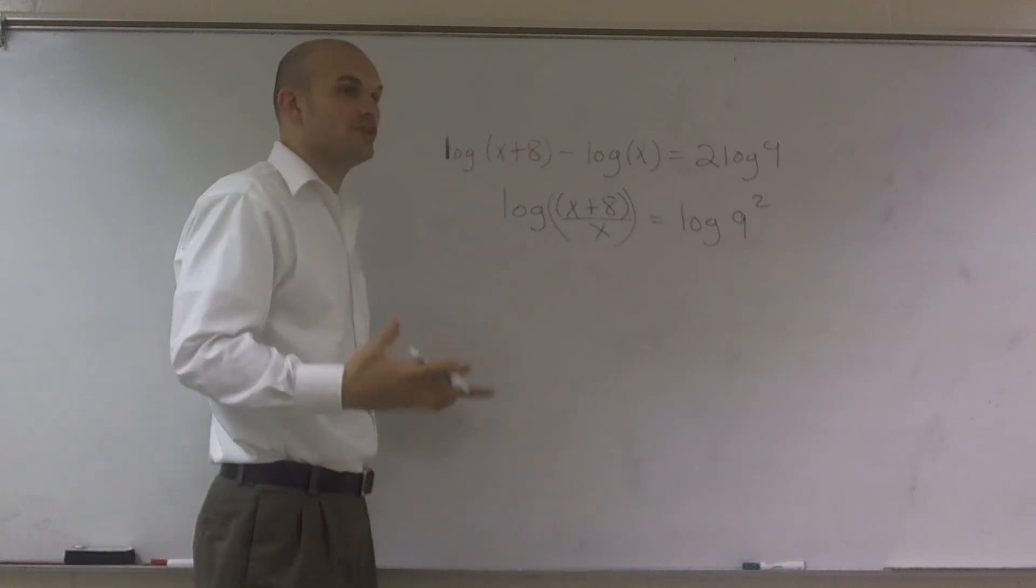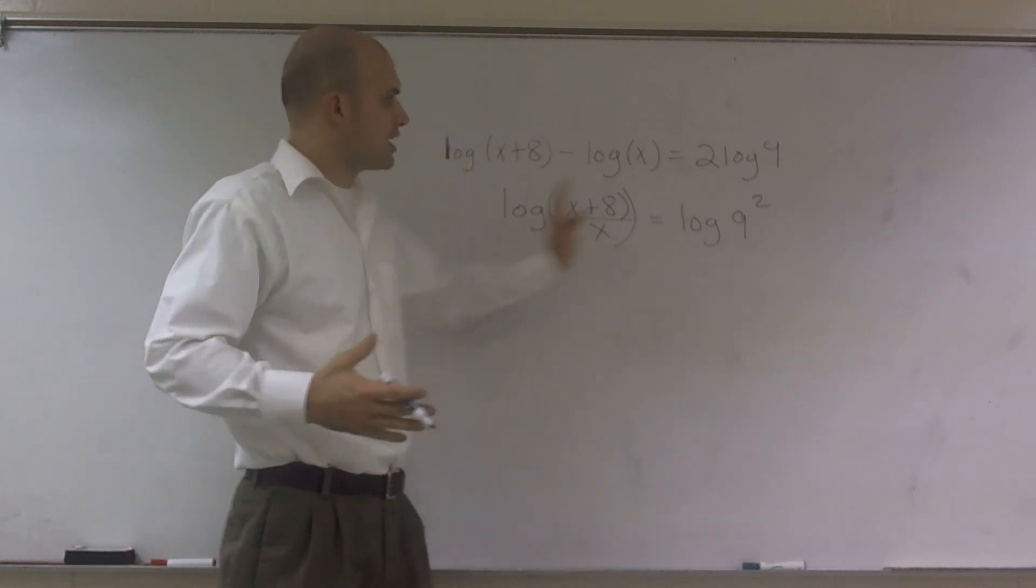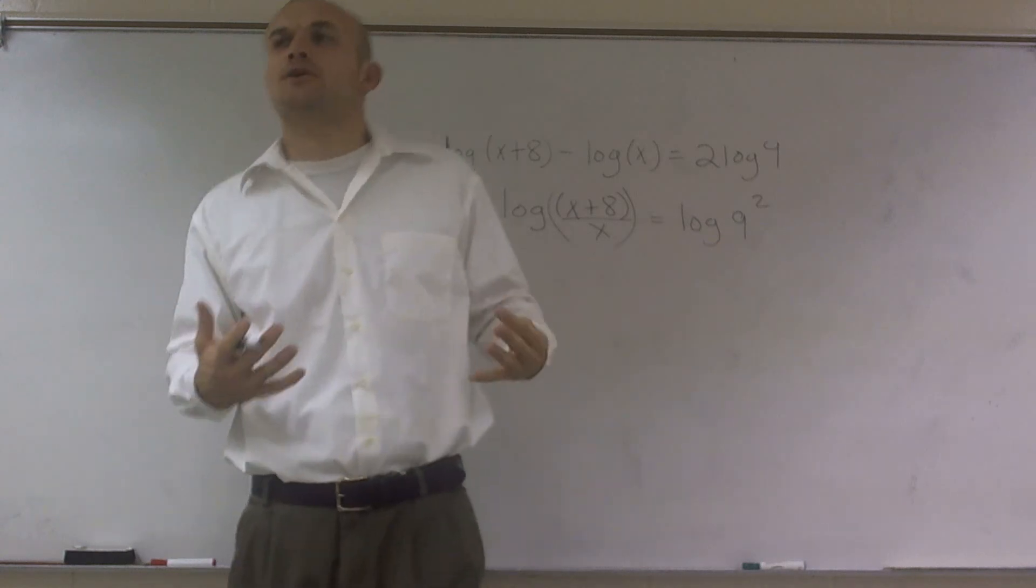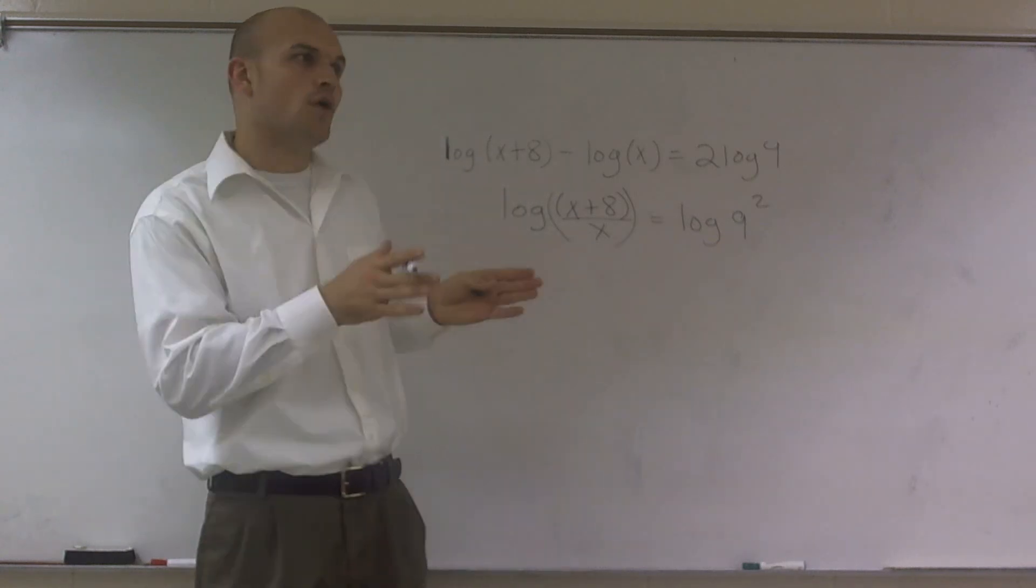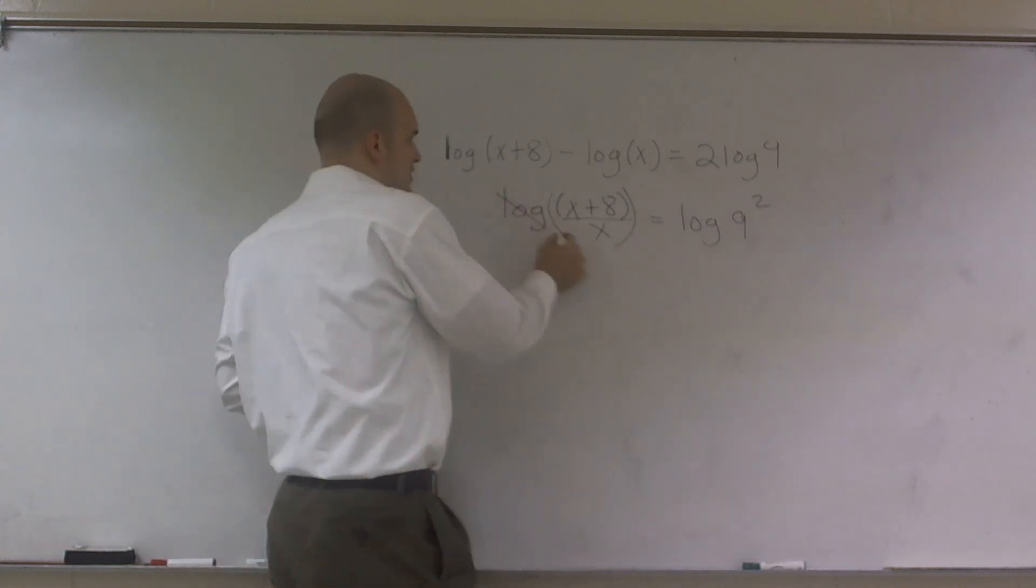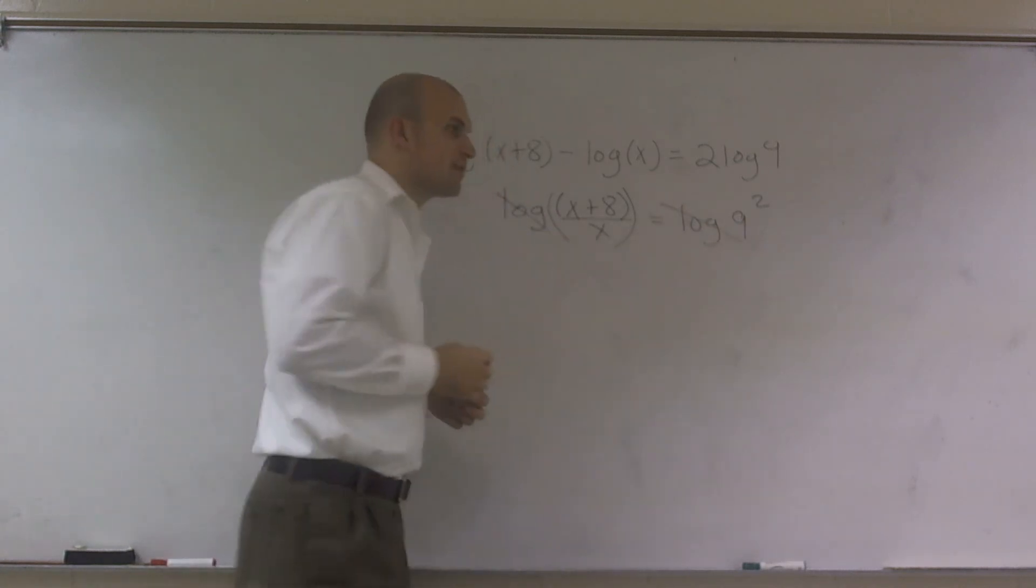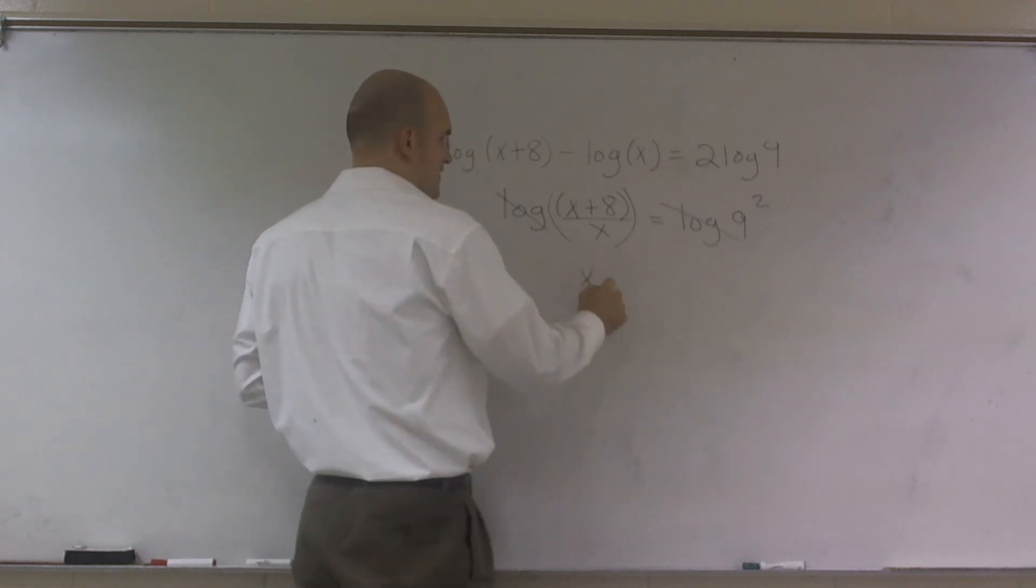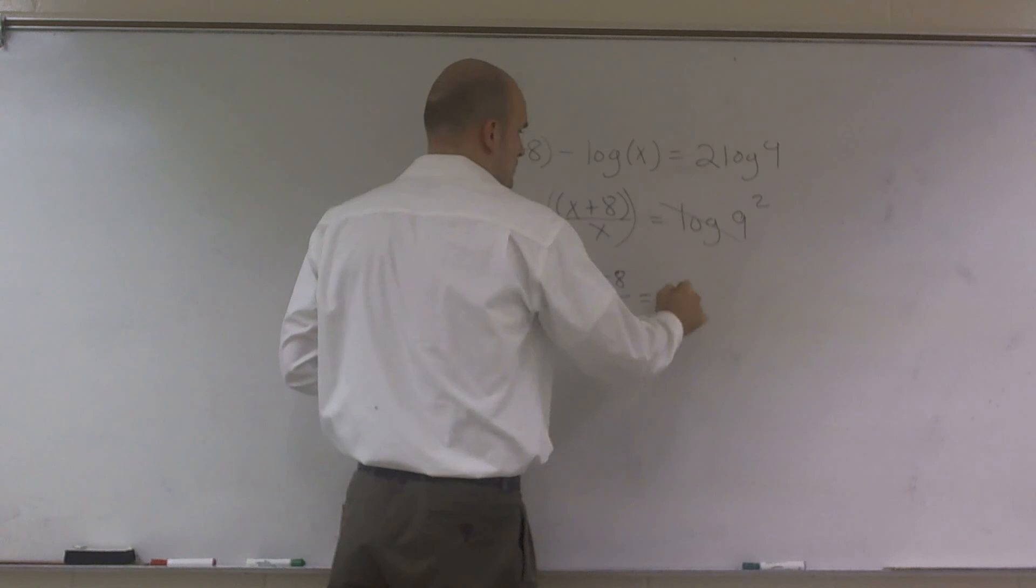So now what happens is we can use our one-to-one property. Whenever you have a log equal to a log, and that's one thing you always want to look at when you're solving logarithms, always look to see if you can get a log equal log or a power equal to a power, because then you can use your one-to-one property to cancel them out. So now I have (x+8) over x equals 9 squared, which is 81.